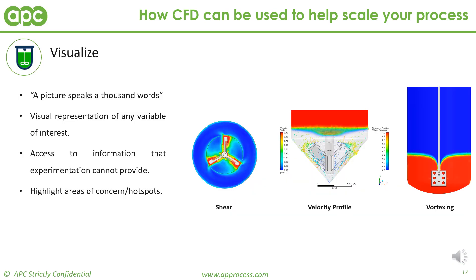Here we have some examples of visual outputs of shear, velocity, and vortexing from CFD simulations. Any variable or parameter of interest can have a visual representation. These profiles provide access to data that physical experimentation does not allow — for example, a probe only tells you the value in a specific area, whereas a CFD simulation can give you a temperature distribution or species concentration throughout the entire vessel, allowing for detection of hot spots or areas of concern.